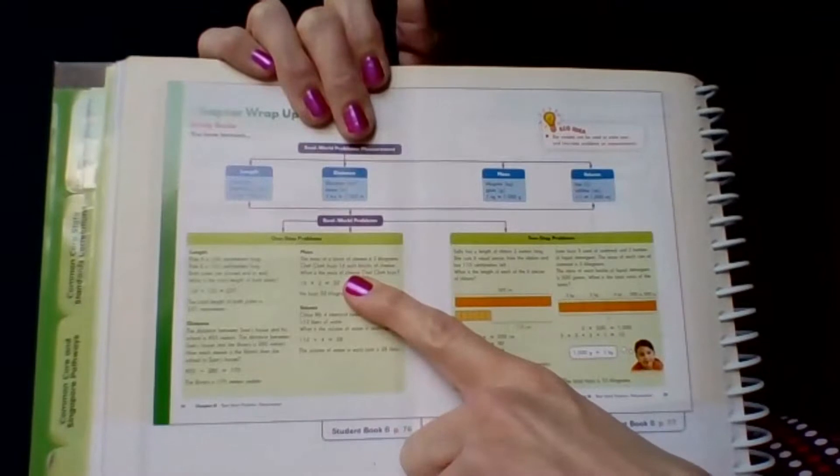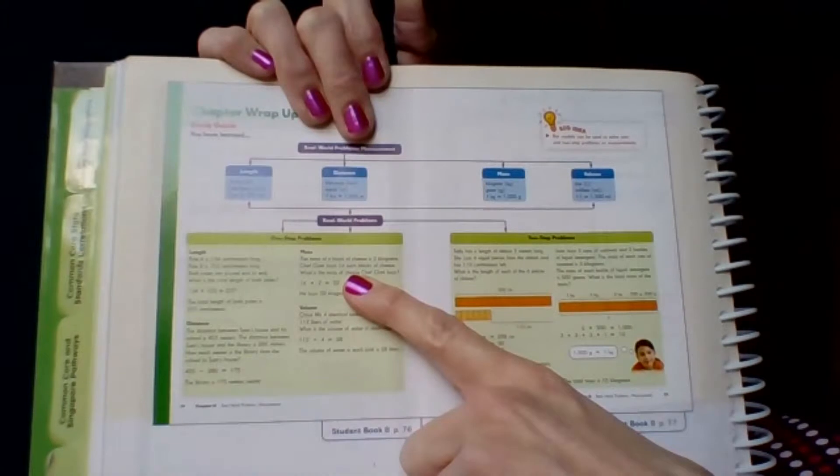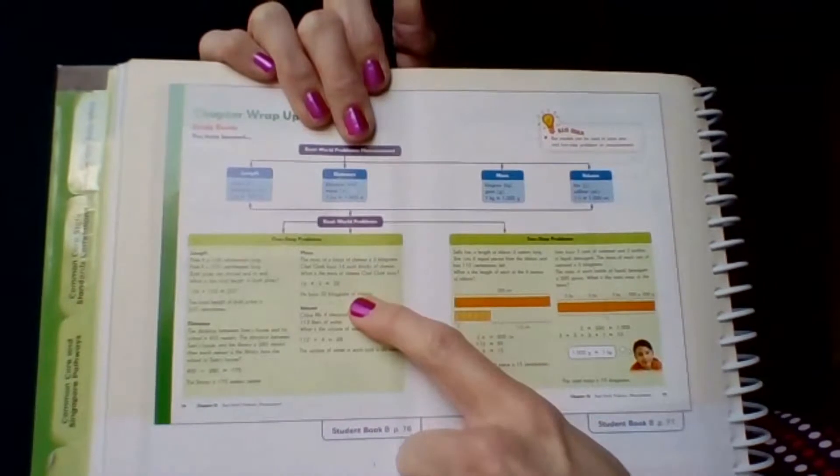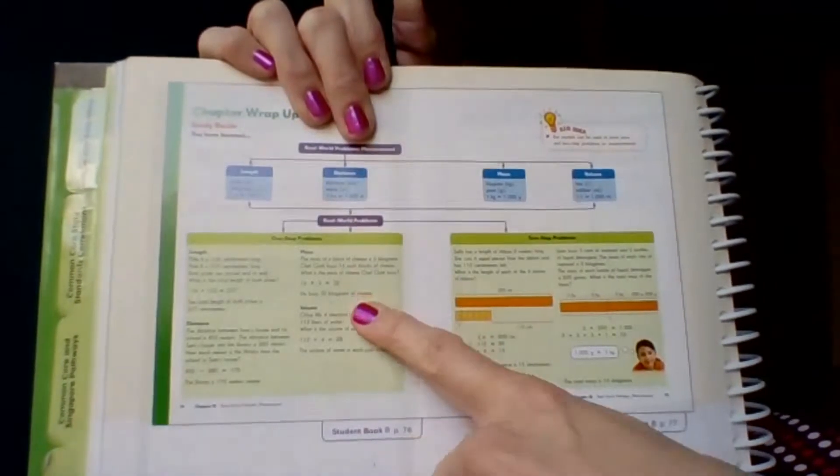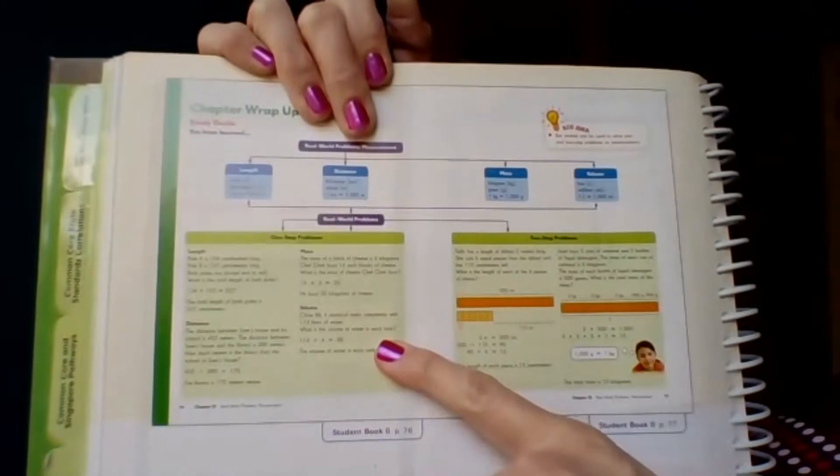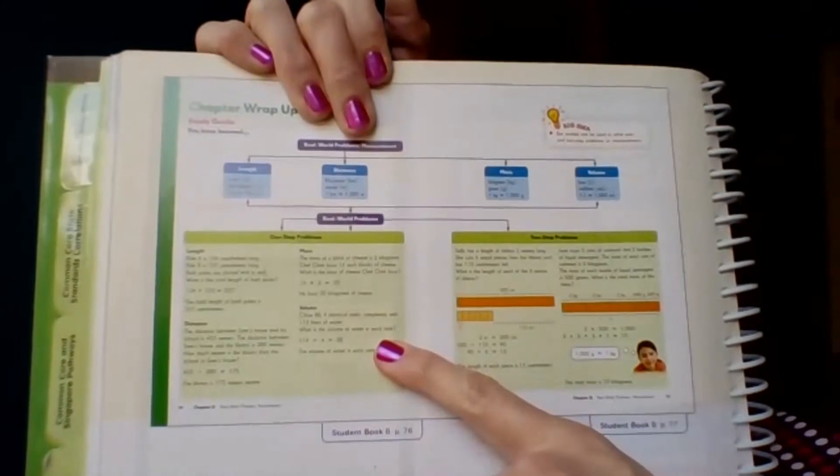Here's an example with mass. The mass of a block of cheese is two kilograms. Chef Clark buys 16 such blocks of cheese. What is the mass of cheese Chef Clark buys? 16 times two is 32. He buys 32 kilograms of cheese.